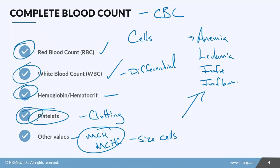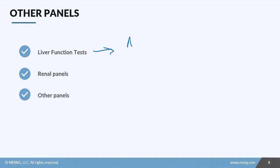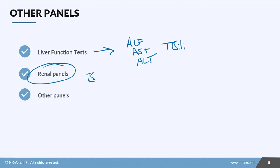You'll also see other types of lab panels such as Liver Function Tests, which include Alkaline Phosphatase, AST, ALT, and total bilirubin — they're specific to the liver and not always included in general panels. Renal panels work the same way, looking more specifically at kidney function through values like BUN, creatinine, and albumin. You may also get a urinalysis on your patient as part of assessing kidney function as a whole.